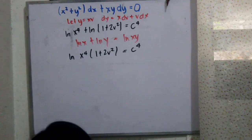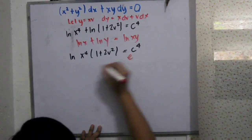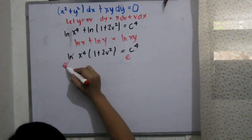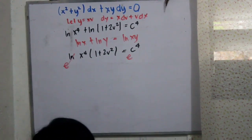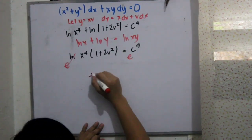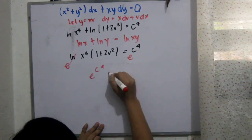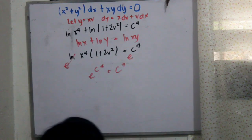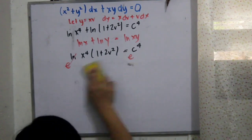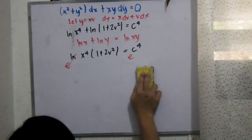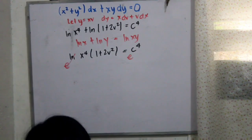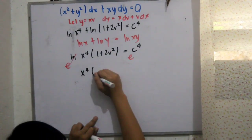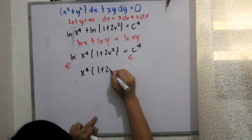To remove the ln, we apply Euler's rule, leaving us with x raised to 4 multiplied by 1 plus 2v squared. Since e raised to c raised to 4 is still a constant, we write it as c raised to 4.